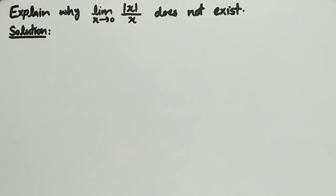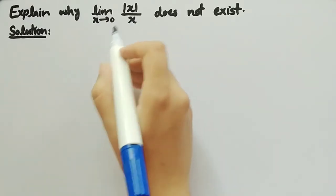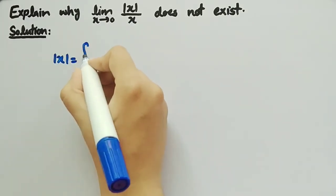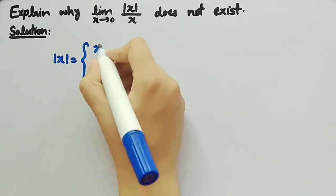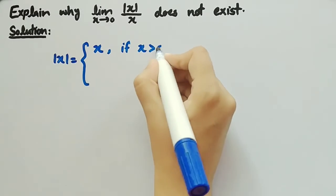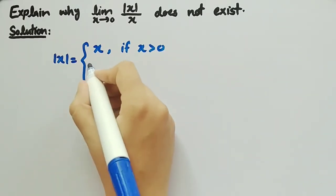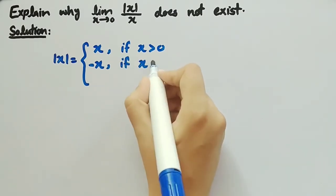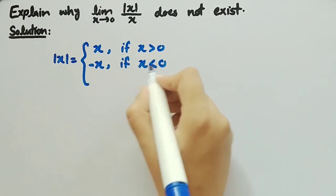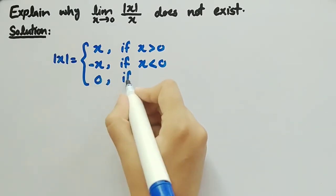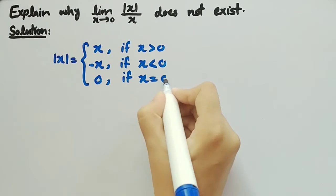Coming towards its solution, we will first write the definition of the function mod(x). Mod(x) is equal to x if x is greater than 0, mod(x) is equal to minus x if x is less than 0, and mod(x) is equal to 0 if x is equal to 0.